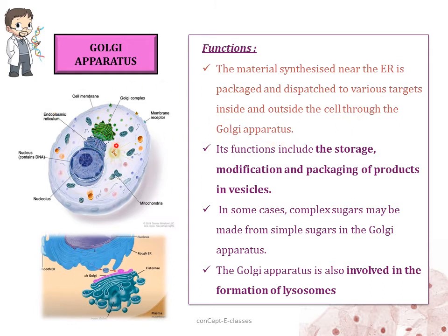The materials synthesized in the endoplasmic reticulum — proteins, fat molecules, and lipids — are packaged and sent to various targets inside and outside the cell through the Golgi apparatus. The main functions of the Golgi apparatus include storage, modification, and packaging of products in vesicles. In some cases, complex sugars may be made from simple sugars in the Golgi apparatus as well. The Golgi apparatus is also involved in the formation of lysosomes.